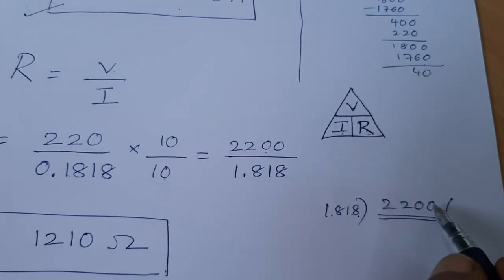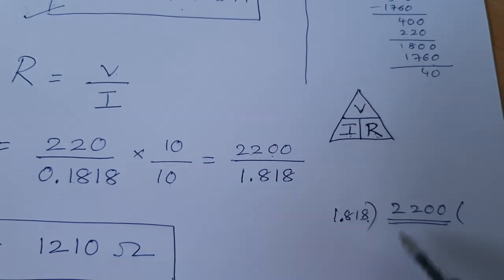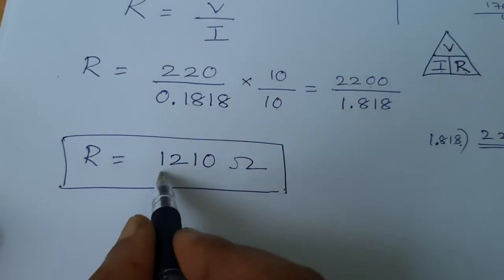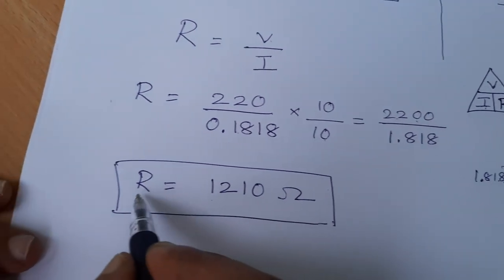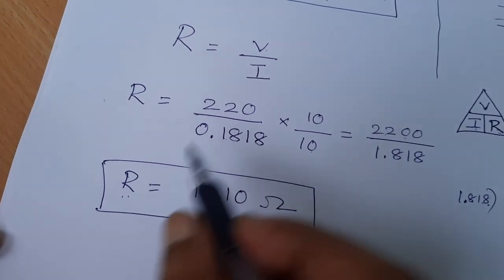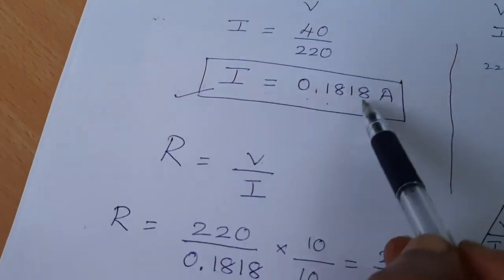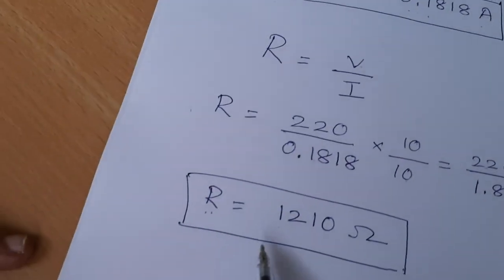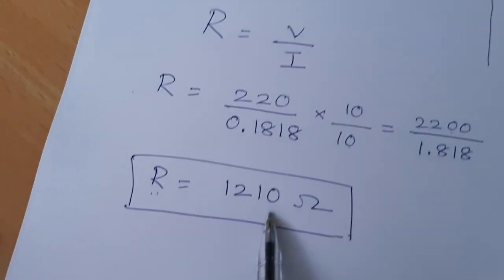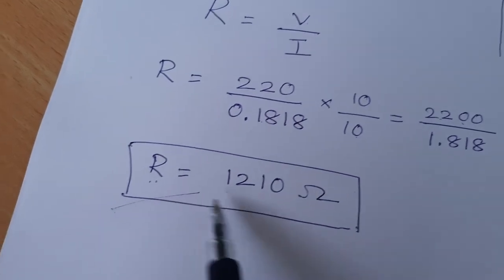So this is the resistance. You get the answer approximately 1210 Ohm. So the current flowing through the bulb is 0.1818 Ampere and the resistance of the bulb filament is 1210 Ohm. Thank you.